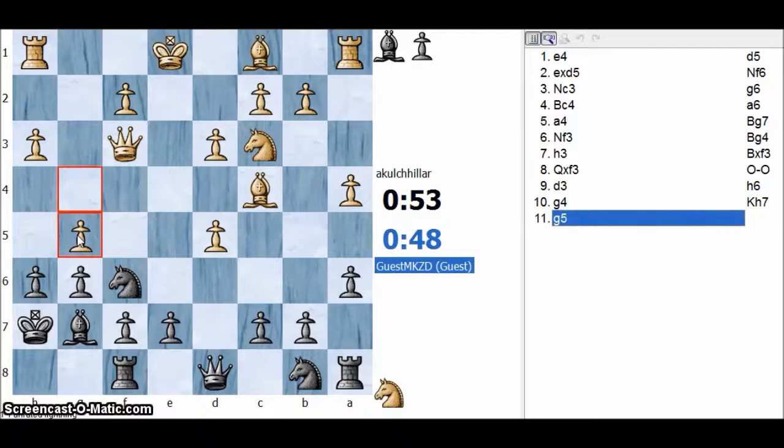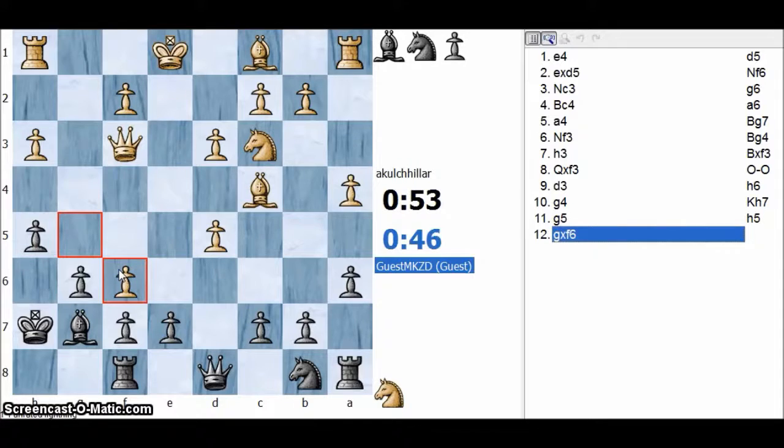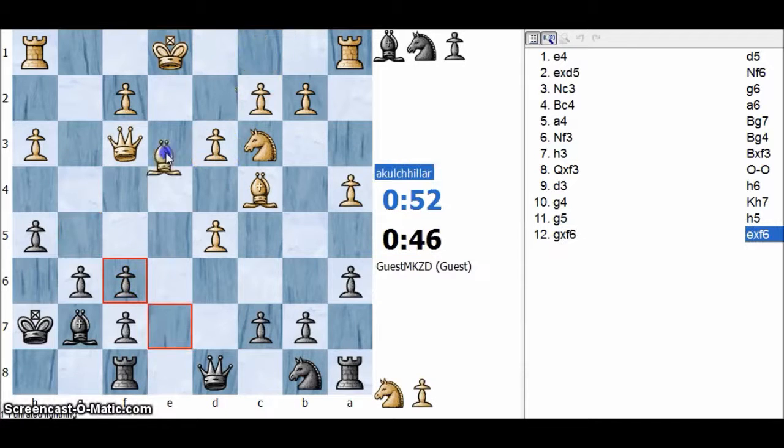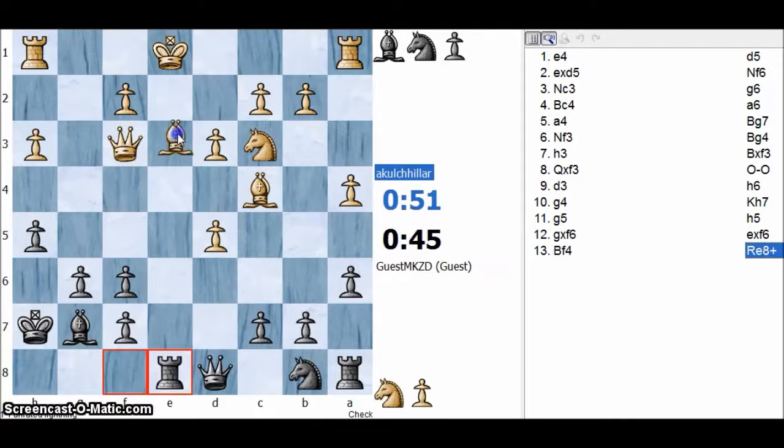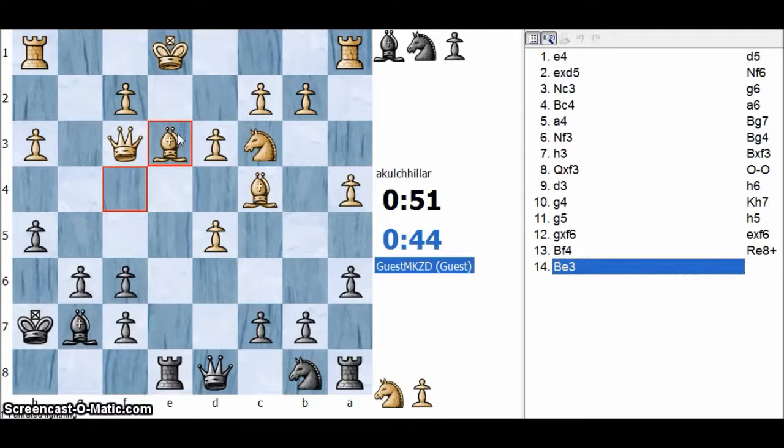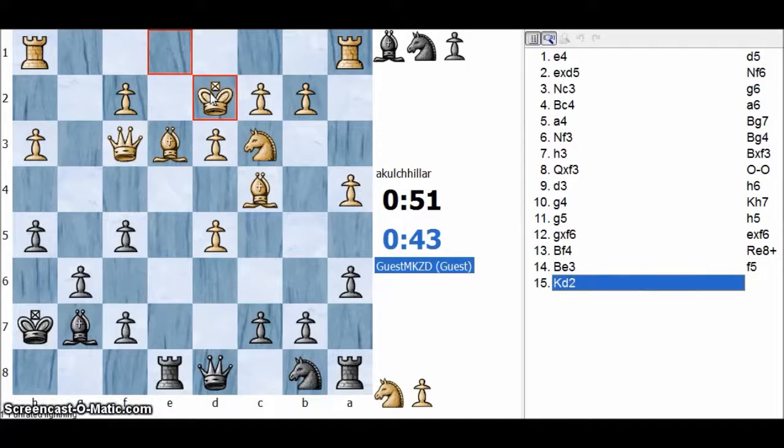At least now I have a pretty good center which my opponent would not be liking because the main idea behind c5 is to discourage d4 from the white side and help him in obtaining a perfect center.